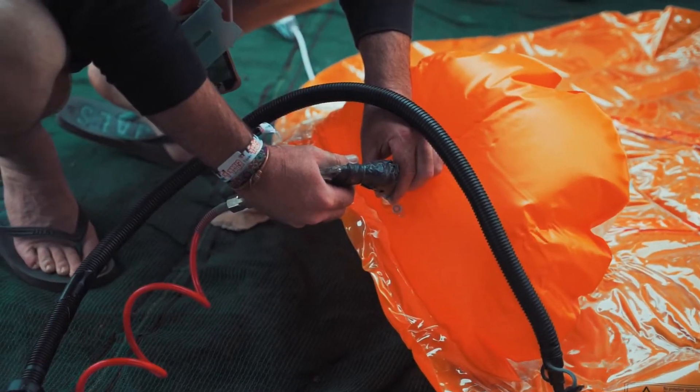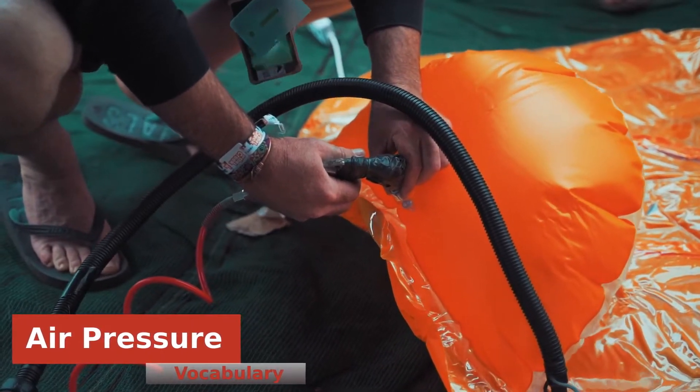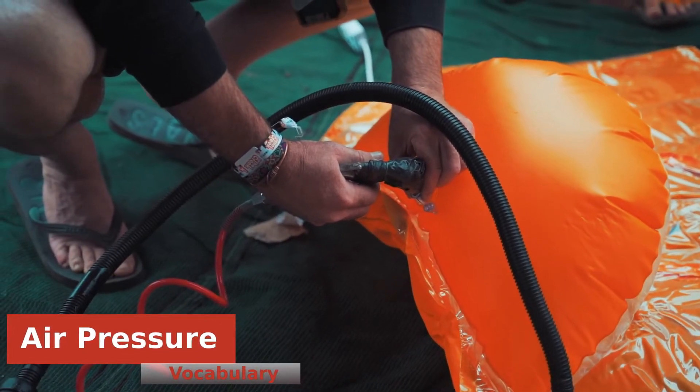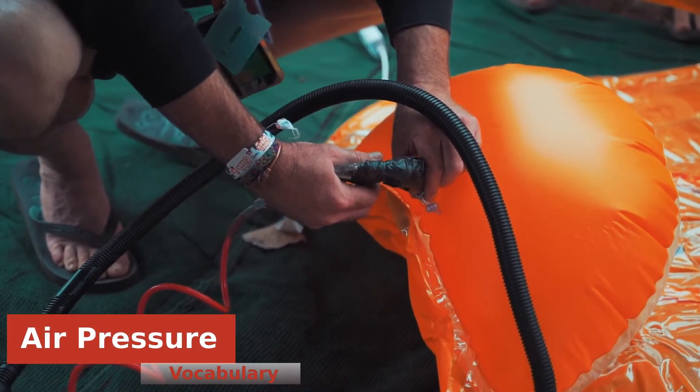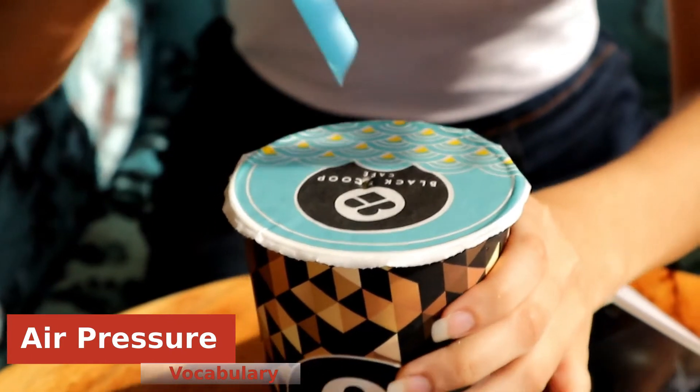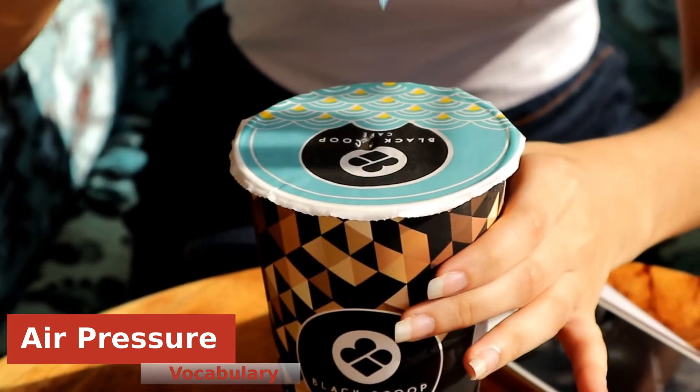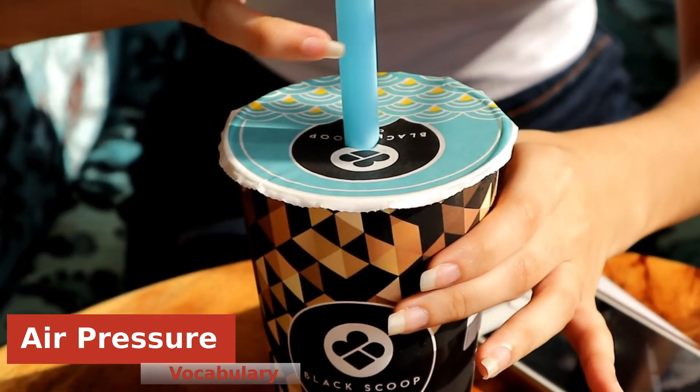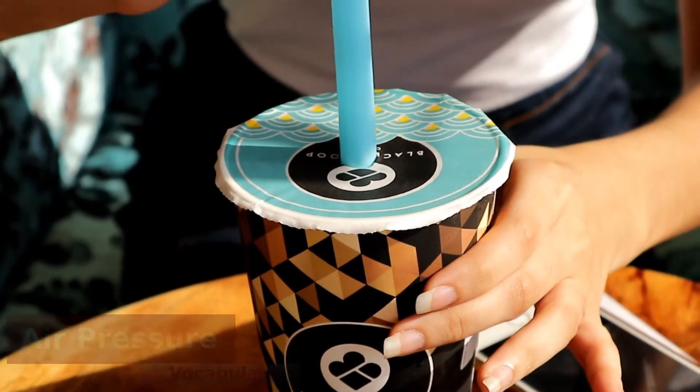Air pressure as it relates to our activity has to do with how much force air has when it's been compressed into a space like a balloon. We use air pressure in our daily lives when we put air into our bike tires, when we play harmonica, or even when we drink using a straw.